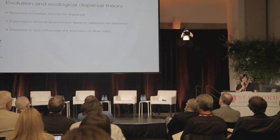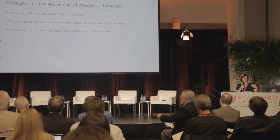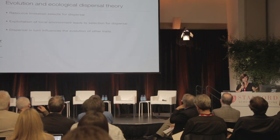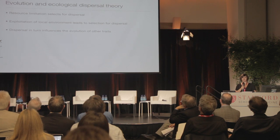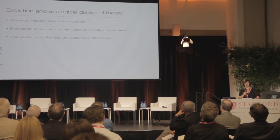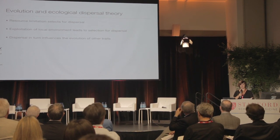In particular, dispersal theory is relevant to metastasis. The main idea behind dispersal theory is that when there's resource limitation, that selects for individuals who can leave the area where resources are limited. One corollary is that if you have a highly exploitative phenotype — using lots of resources — that's going to lead to selection for dispersal because you're creating an environment that's not as good. And once you have the evolution of dispersal, that can then select for other traits like more exploitation of your environment. There are really interesting dynamics here informed by decades of research on dispersal in organisms.